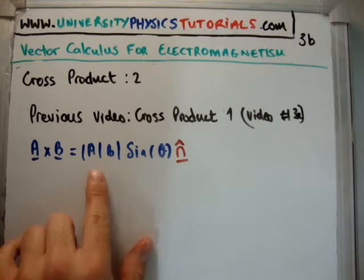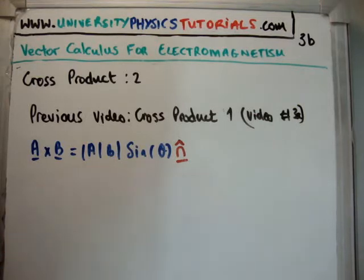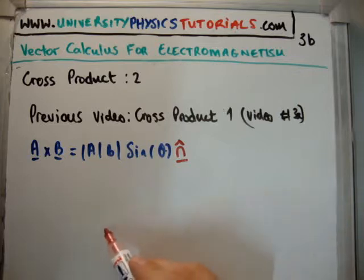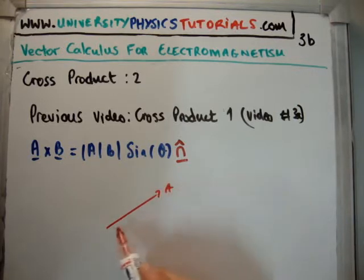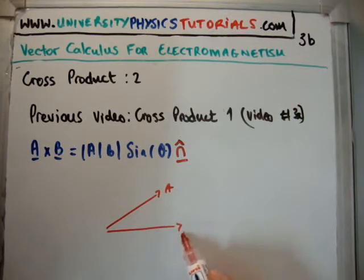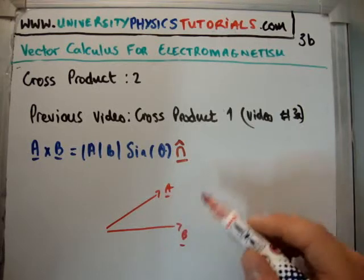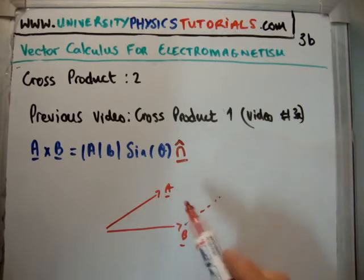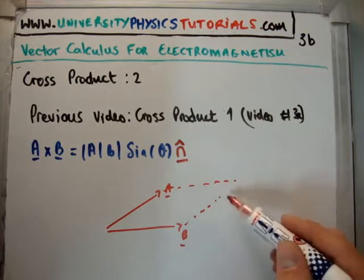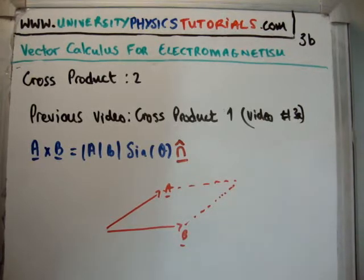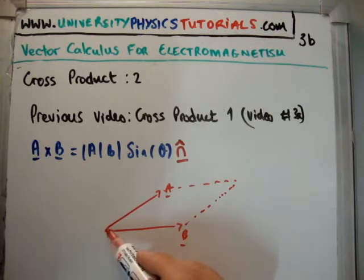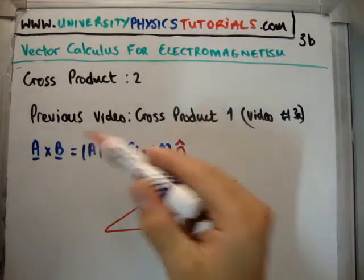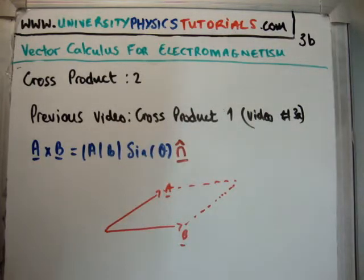So geometrically, A multiplied by B is the magnitude or area of the parallelepiped made by A and B. If you can imagine, let's say this is A and this is B. Then the parallelepiped, let's just continue on this. This is the parallelepiped made by A and B. So A cross B, the magnitude here is going to get the area of our parallelepiped.